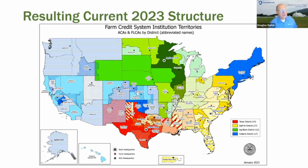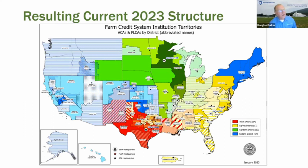This map shows the different associations throughout the United States. You can see Horizon's territory covering Pennsylvania, Delaware, most of Maryland, the Virginia Shenandoah Valley, the lower Delmarva Peninsula, and the two West Virginia panhandles.